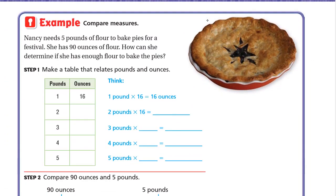Now let's look at an example: comparing measures. Nancy needs five pounds of flour to bake pies for a festival. She has 90 ounces of flour. How can she determine if she has enough flour to bake the pies? We will make a table that relates pounds and ounces to show whether five pounds is greater than or less than the 90 ounces she has.